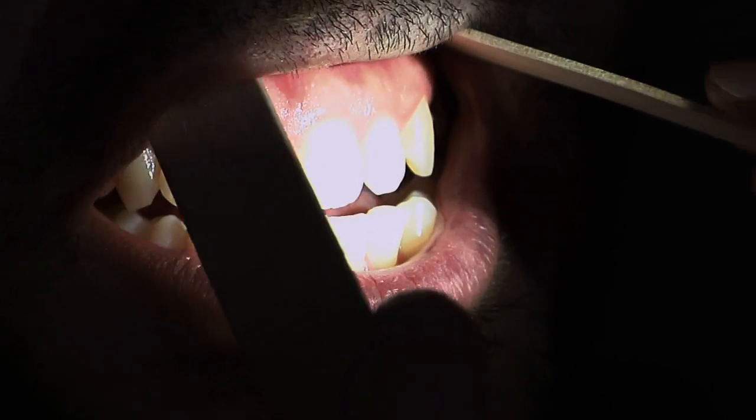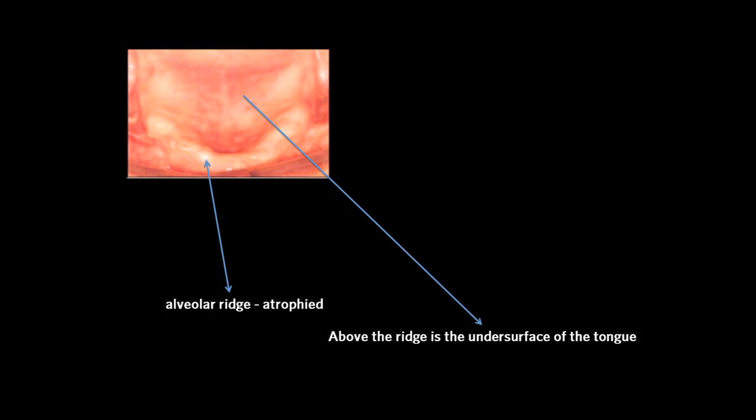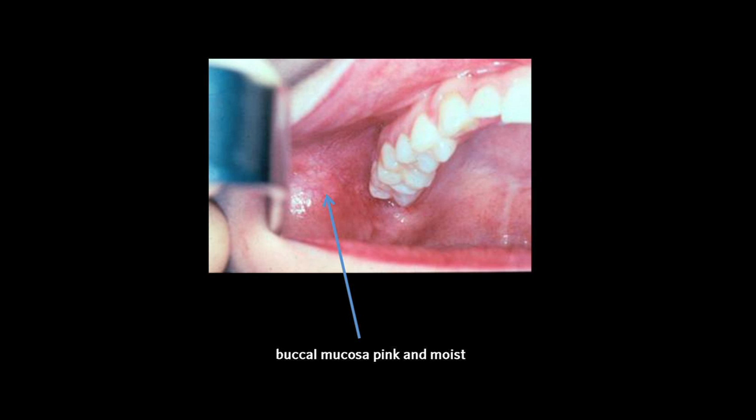Examine the teeth for status. If the patient wears dentures, they should be removed to allow complete evaluation of the oral cavity, specifically to evaluate the mucosa and the alveolar ridge, which is often atrophied in patients who have dentures. The mucosa is normally pink and moist.